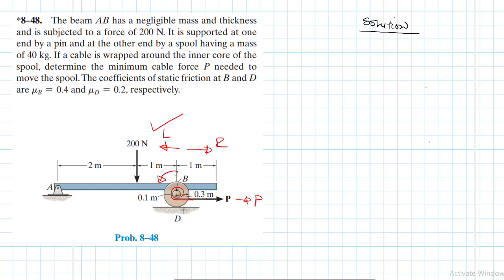We've been asked to determine the minimum cable force P needed to move the spool — it's moving to the left. Where do you expect slip as the spool moves to the left? It just makes sense that you do not expect any slip at D for it to move. If you want this spool to move, you don't expect any slip at D. But since the beam is hinged at A, it is not free to move in the horizontal direction. So there is going to be slip at B. Once we have that understanding, the problem is solved.